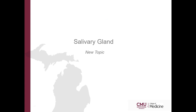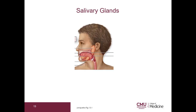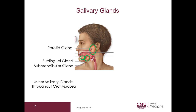Let's go on to the salivary gland. This is the parotid gland, this is the sublingual gland, and this is the submandibular gland — simply to remind you of the locations of the large salivary glands. There are minor salivary glands present throughout the oral mucosa, which is important because the minor salivary glands are much easier to biopsy than the large salivary glands.